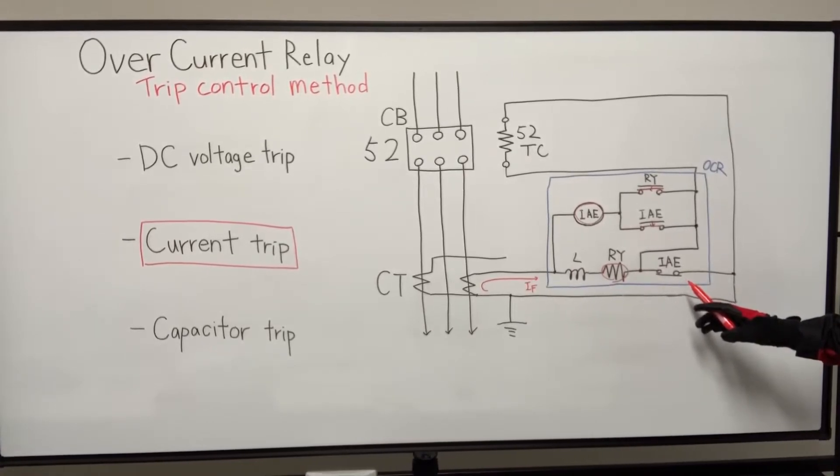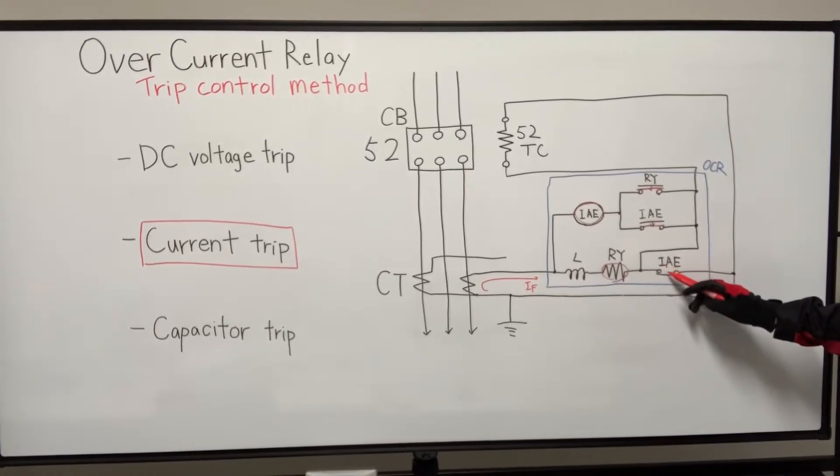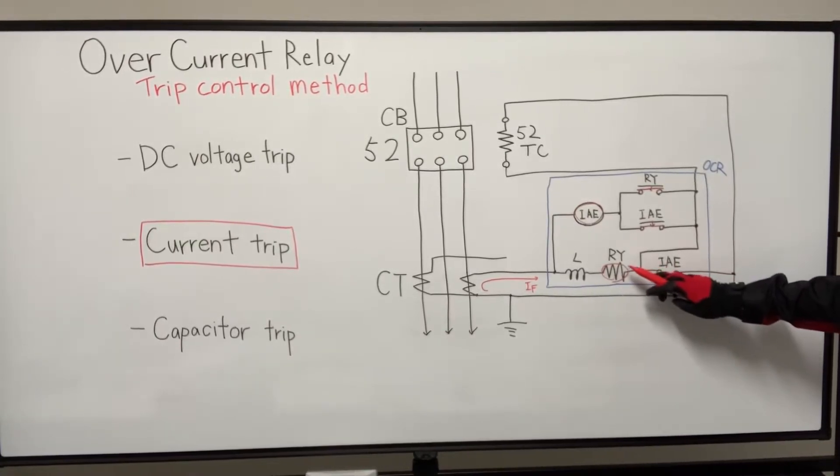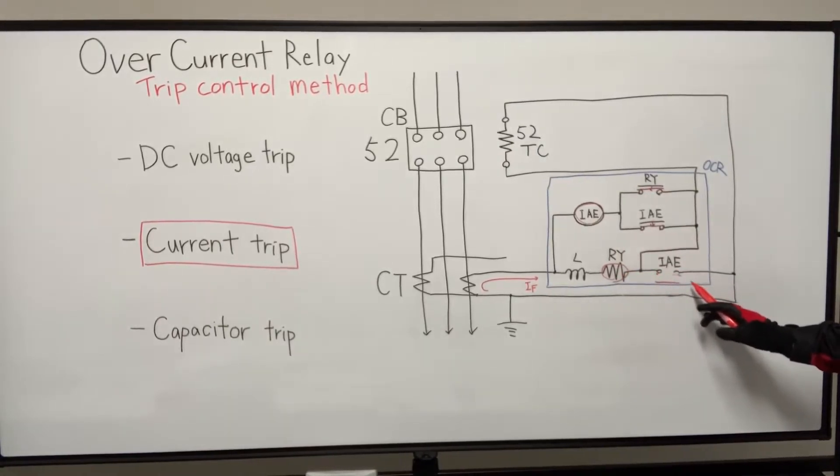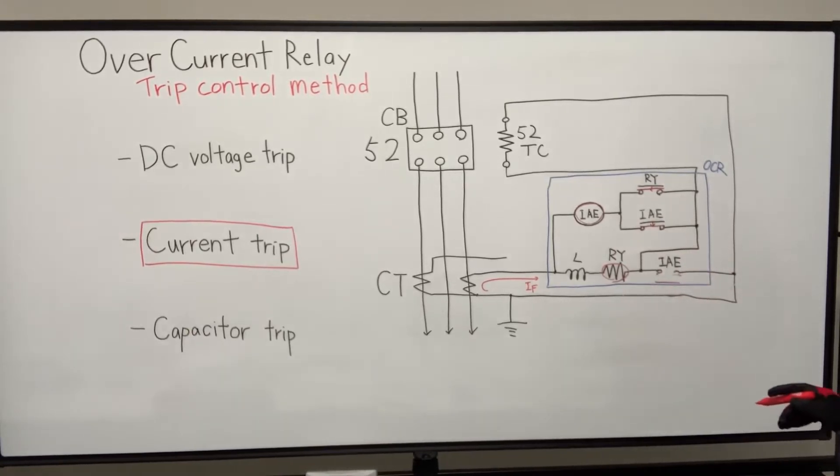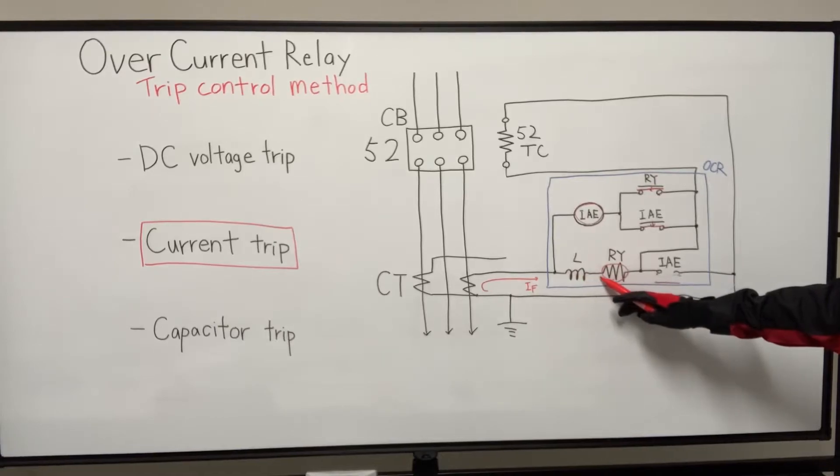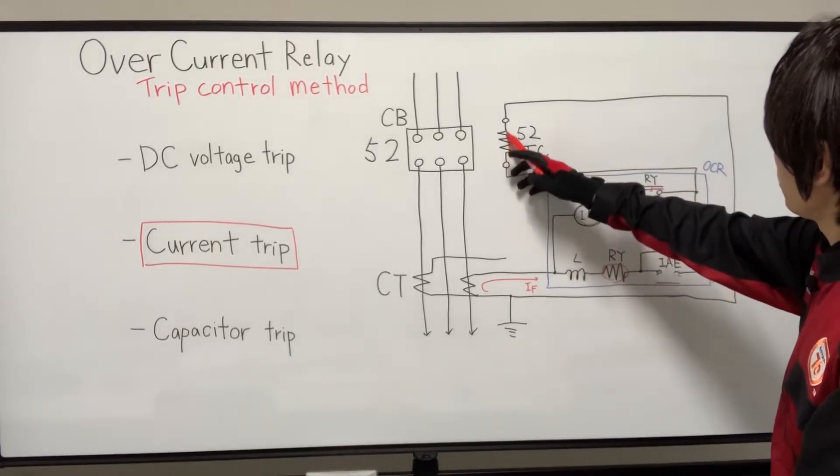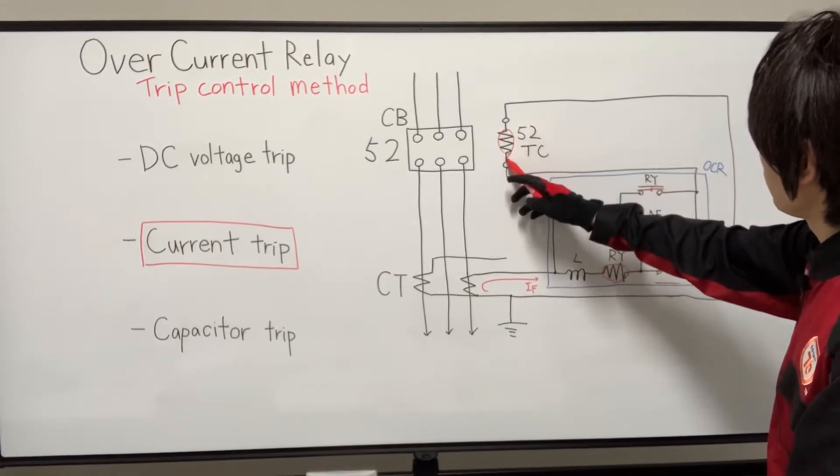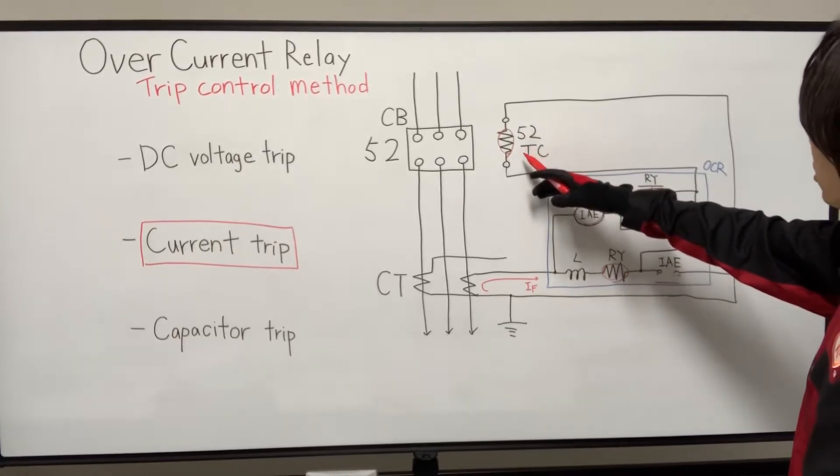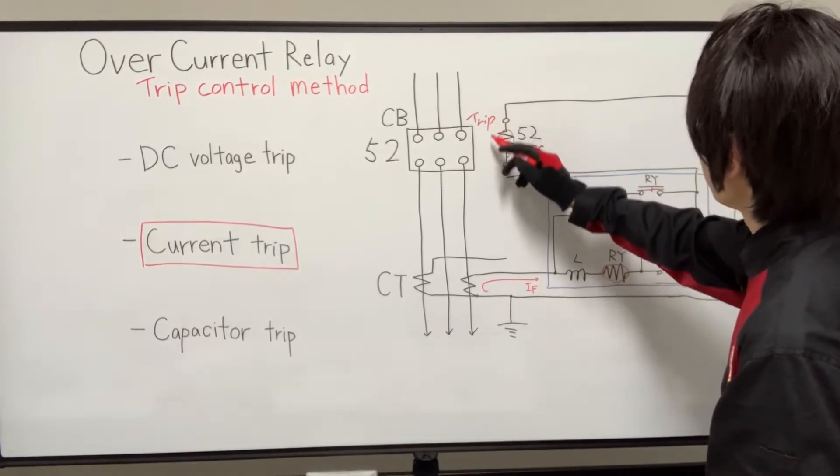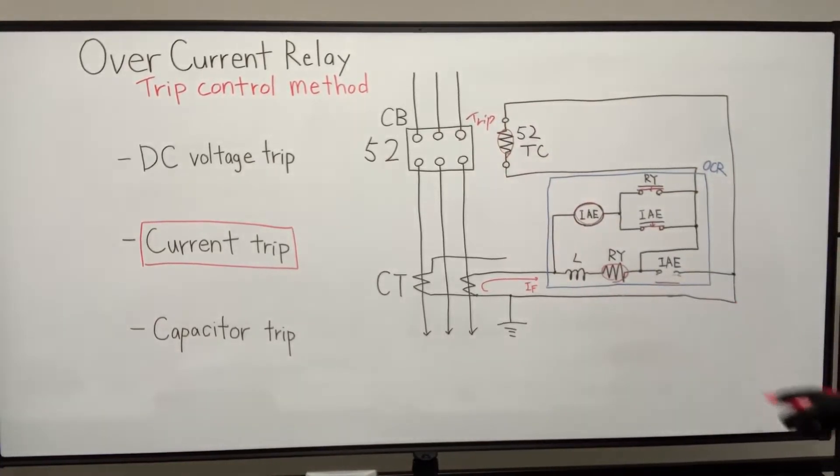And also, this normally closed contact is turned to open. So here is open circuit. So there are no longer to this loop this open circuit. So IF is flow this loop instead. And 52 trip coil is energized, and circuit-breaker 52 will trip.